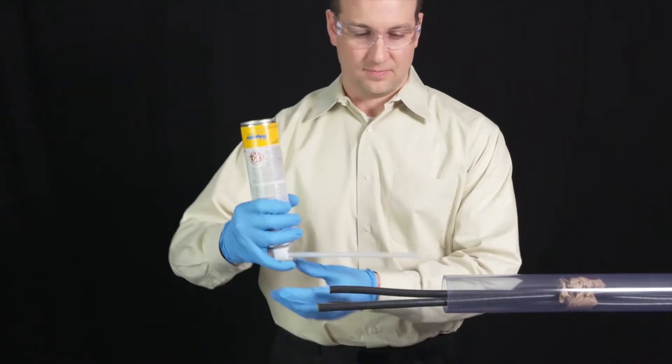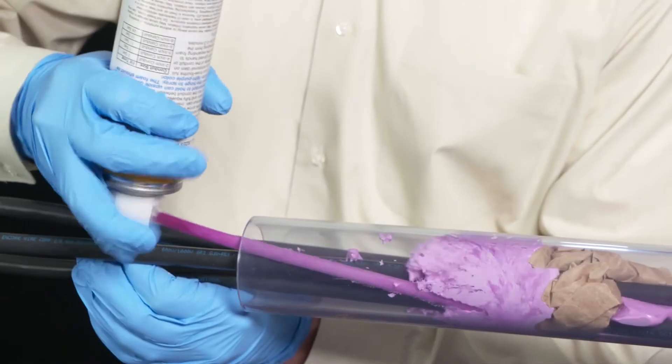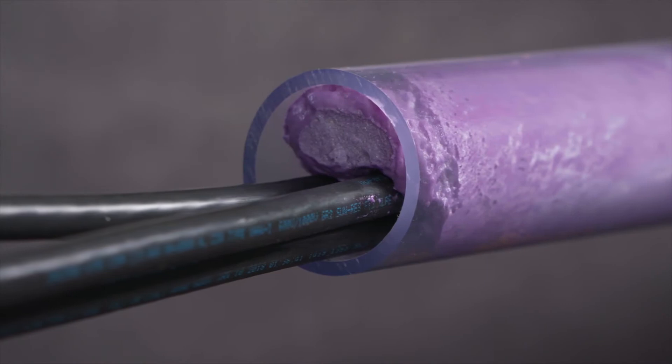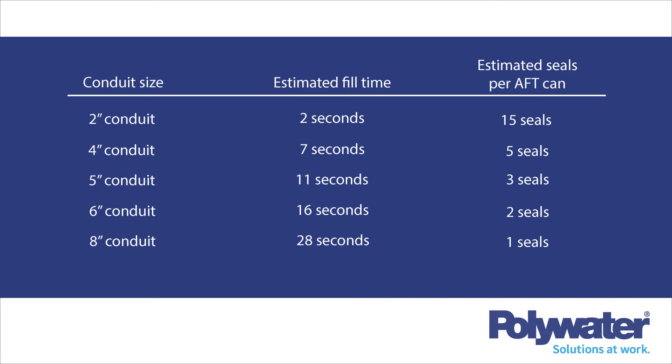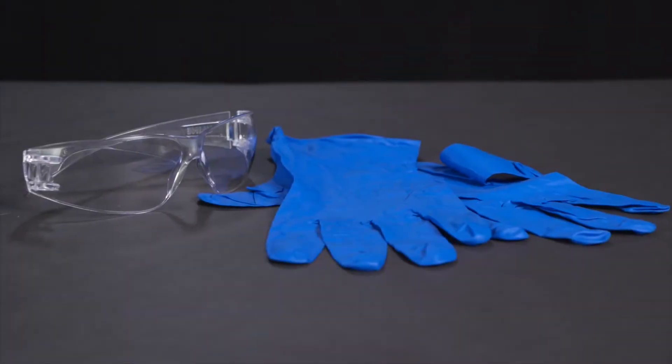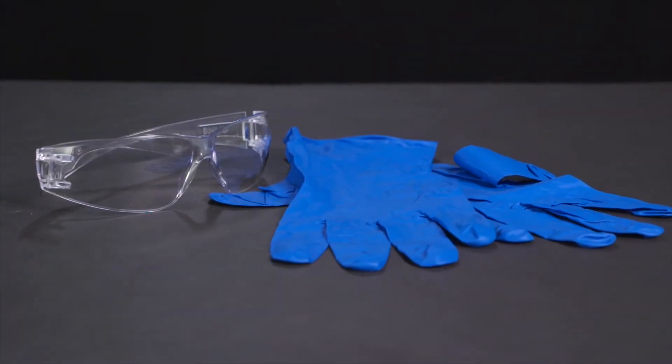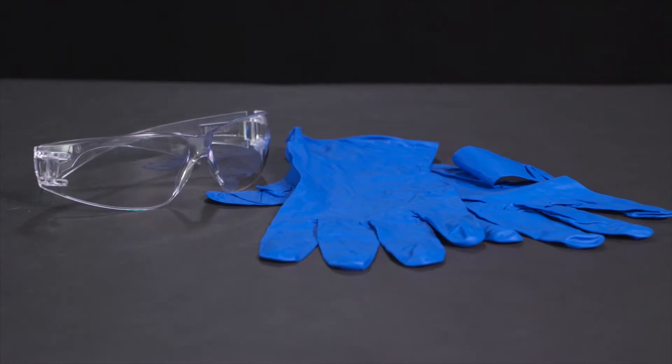It's important when mixing AFT that all the steps in the mixing and deployment process are followed. Make sure that you review the chart of target fill times on the AFT can label and use them to determine how much sealant you will need. Wear protective equipment as the can instructions recommend: safety glasses, gloves, and protective clothing.